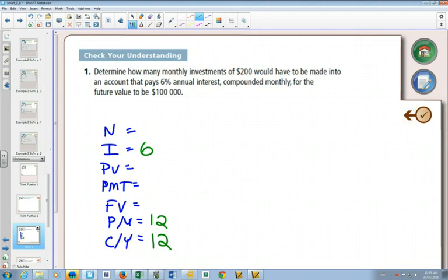We are making monthly investments of $200. Since that $200 is coming out of your pocket and going into an investment, that value would be negative.